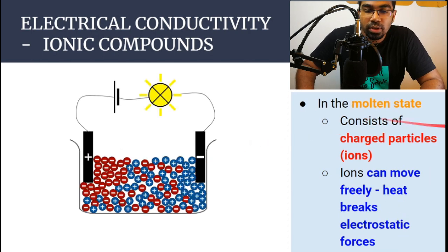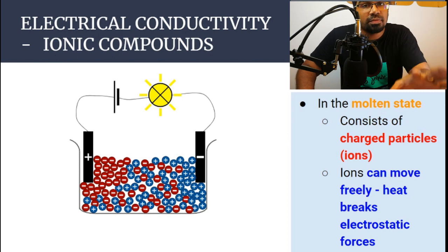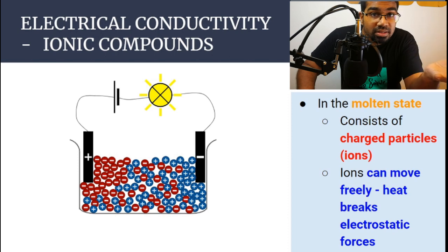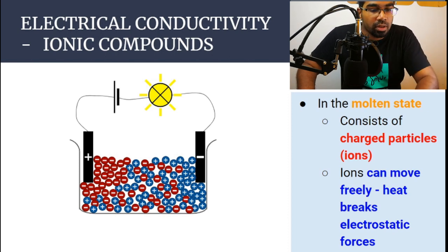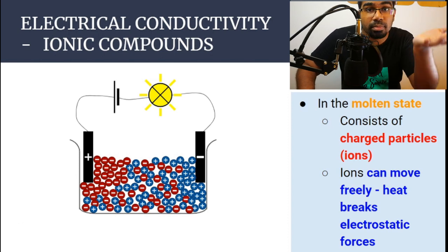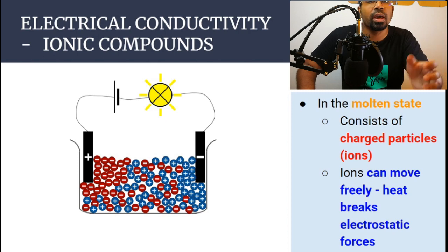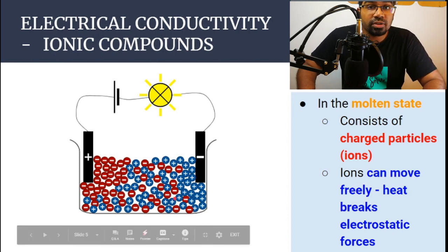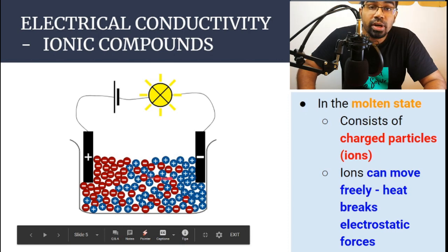Let's look at ionic compounds in the molten state. The molten state is essentially a liquid state, but specifically when we heat up a solid at room temperature until it melts. In this state, the strong electrostatic forces between the ions in the solid state have already been broken down because we have supplied the heat energy to overcome the electrostatic force.